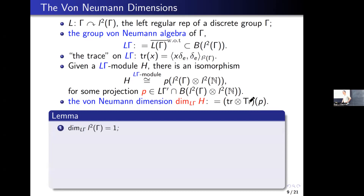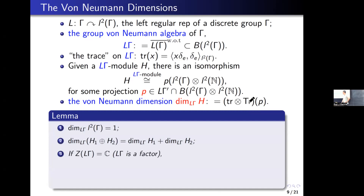Here are some nice properties of von Neumann dimension. First, the von Neumann dimension of the L2 functions on the group is 1, so we usually call L2 functions the standard module. Second, the dimension function is summable — the dimension of a direct sum is the sum of dimensions. Third, if the center of the group von Neumann algebra is trivial (i.e., it is a factor), then two L(gamma)-modules have the same dimension if and only if they are isomorphic as L(gamma)-modules.